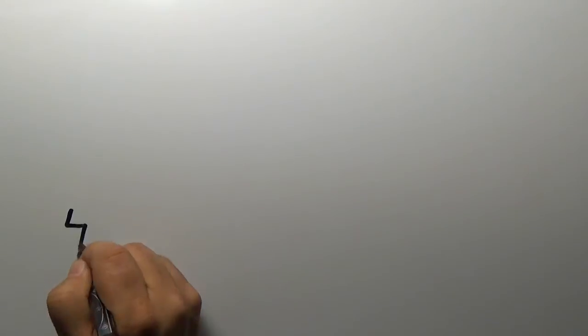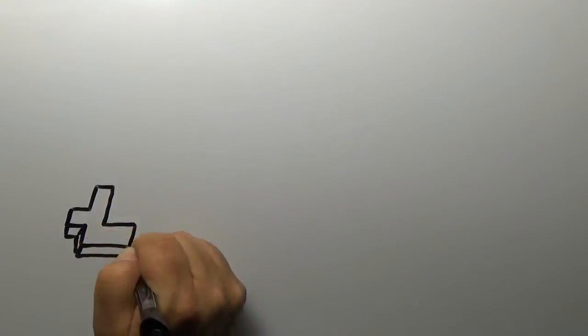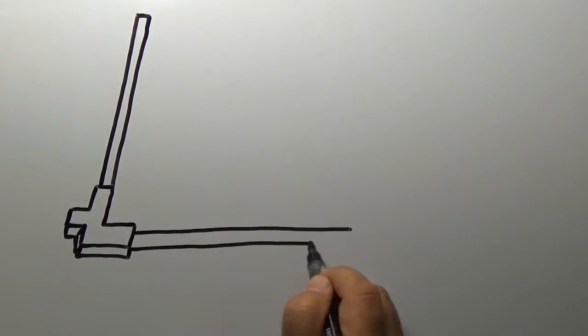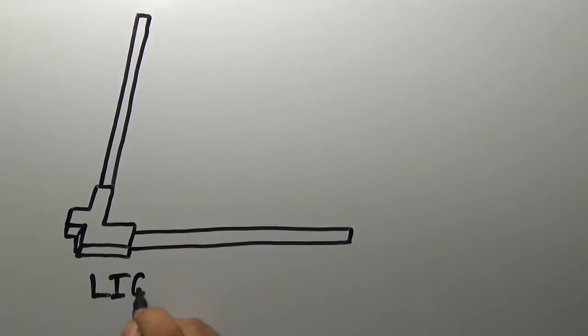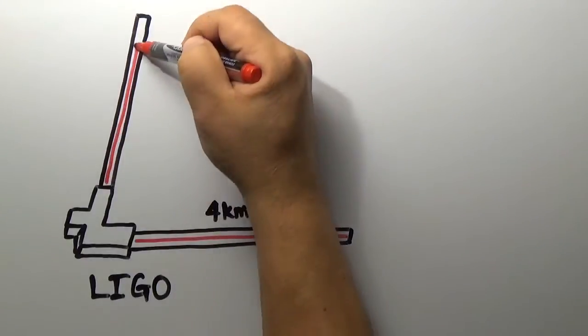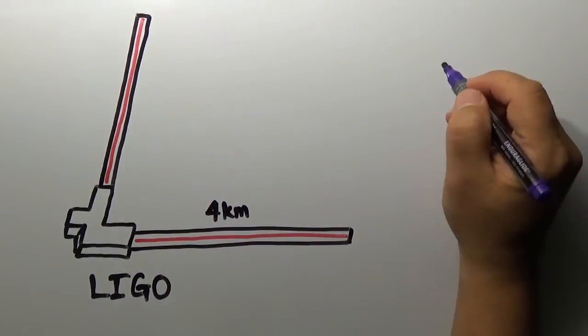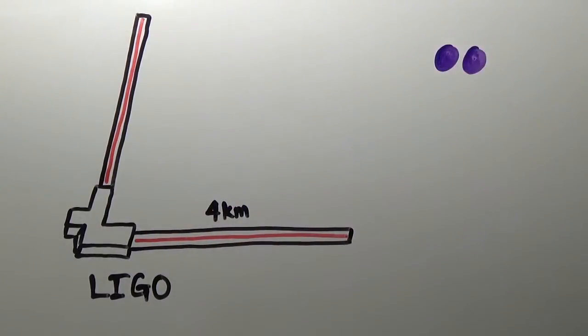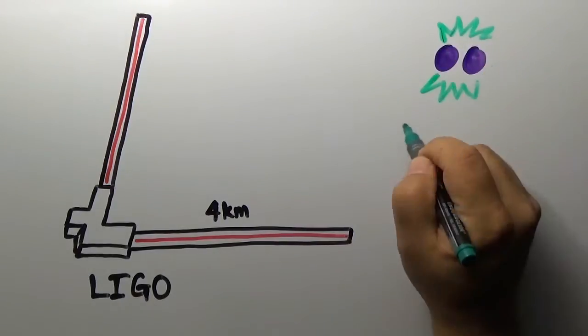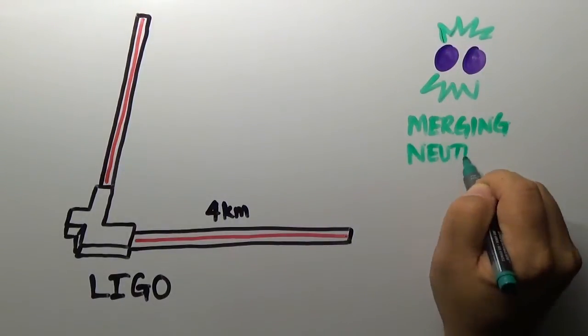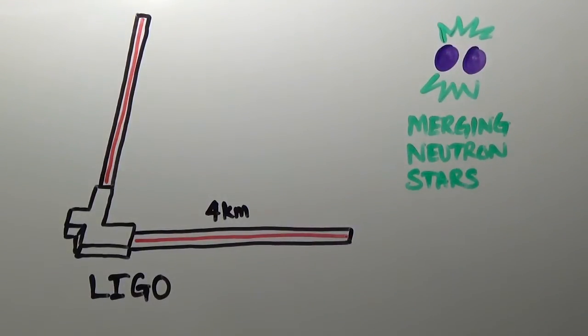We now know that gravitational waves are too faint to be detected by a Weber bar, so in the early 2000s, astronomers started looking with a laser interferometer called LIGO. Four kilometers end-to-end, one of the main sources LIGO should see is two neutron stars circling each other hundreds of times per second before merging.